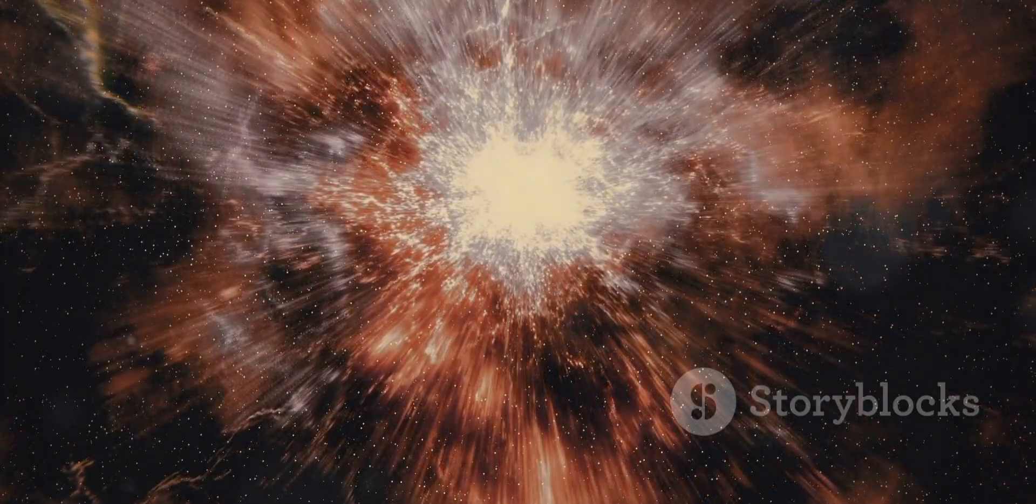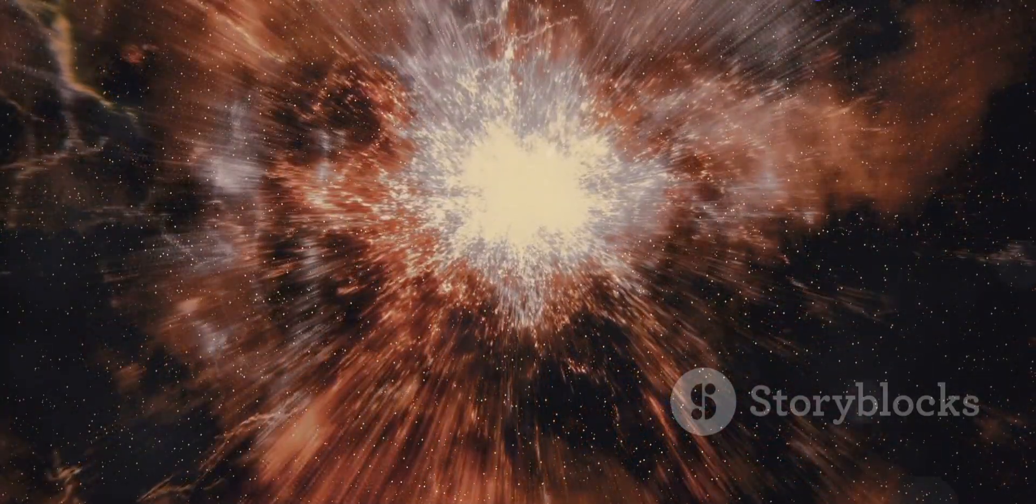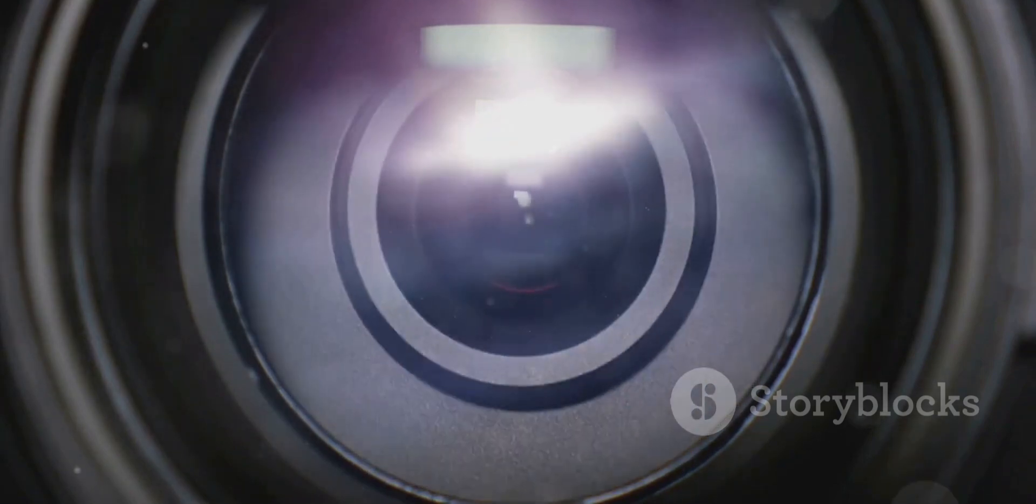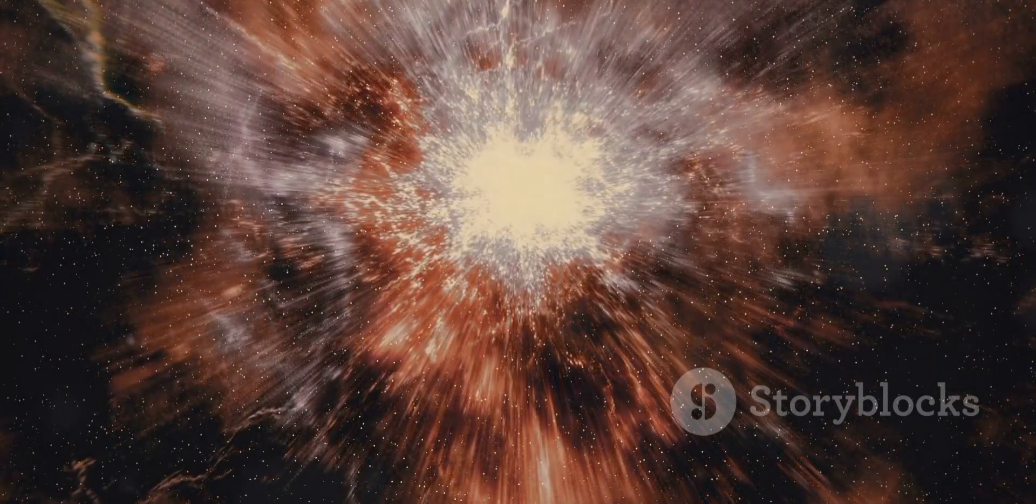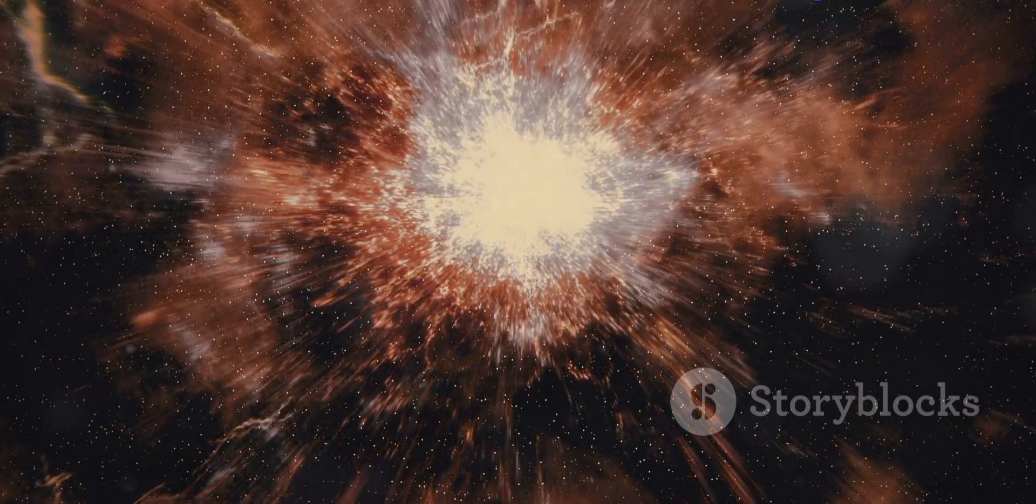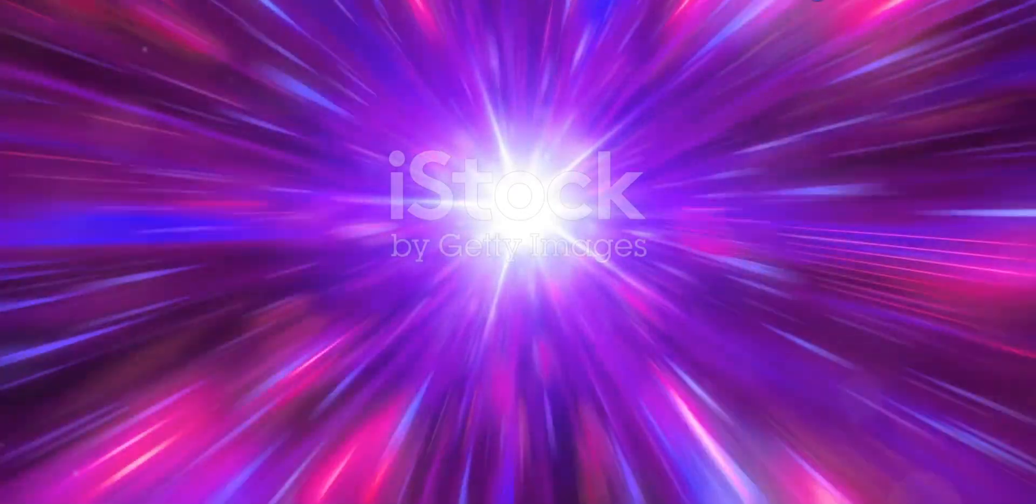Another famous supernova is SN 1987A. This supernova occurred in the Large Magellanic Cloud, a dwarf galaxy that orbits our Milky Way galaxy. SN 1987A was the closest supernova to Earth in over 400 years. It provided astronomers with a wealth of data about these events.